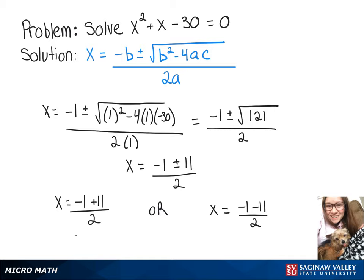So negative 1 plus 11 over 2 gives us x equals 5 or negative 1 minus 11 is negative 12 divided by 2 gives us negative 6.